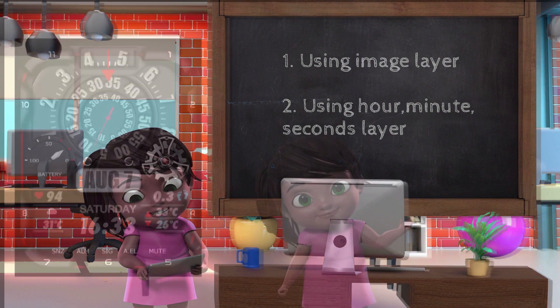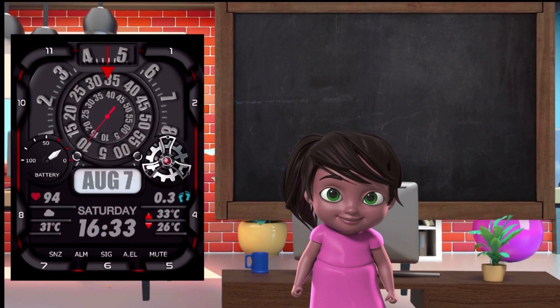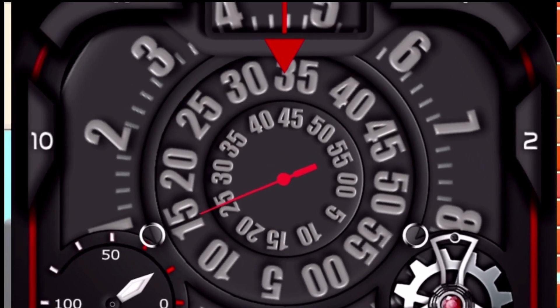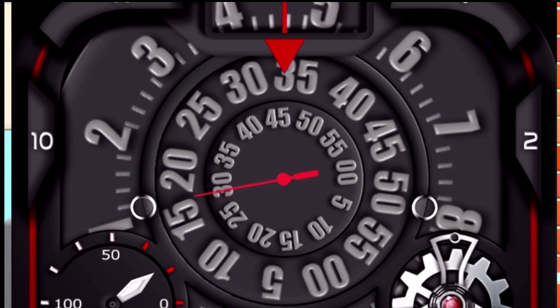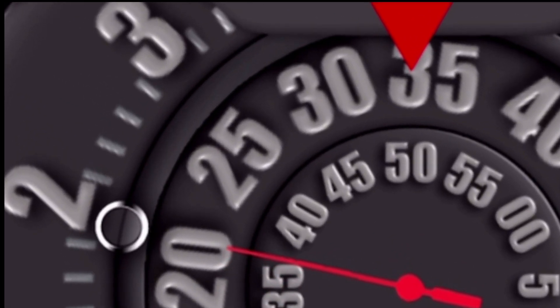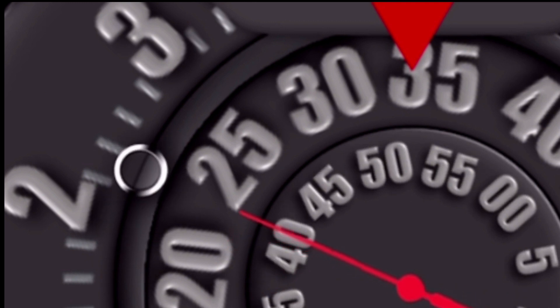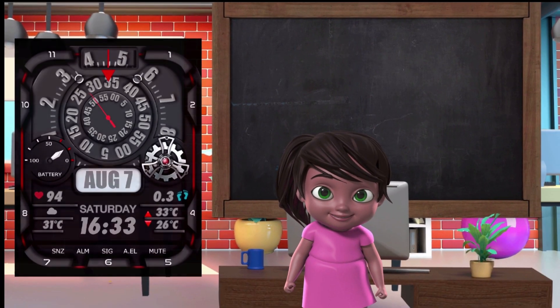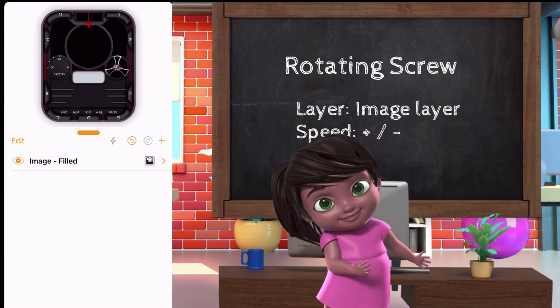Let's see how this watch face moves, the screw, the rotating hour, minute, and seconds, and the small rotating metal around the hour. Let's start with the screw.